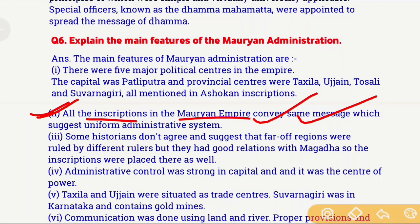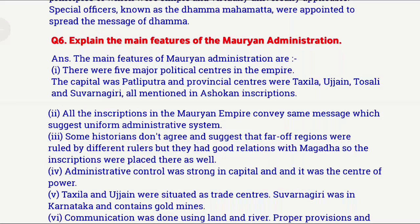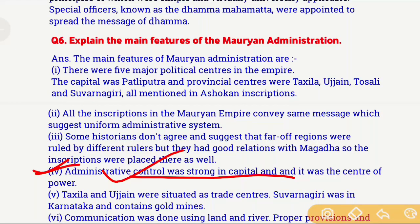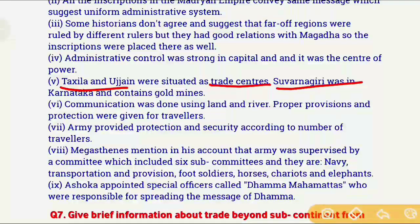All inscriptions found throughout the Mauryan Empire convey the same message, suggesting that possibly the same kind of administrative system was practiced across the entire empire. However, some historians disagreed, arguing that in distant regions, different rulers may have ruled but maintained a good relationship with Magadha's rulers — which is why we find the same inscriptions in those areas. The capital city had the strongest administrative control — the ruler lived there and administered the entire empire from there. Taxila and Ujjain were important trade centers, and Suvarnagiri in Karnataka had gold mines.